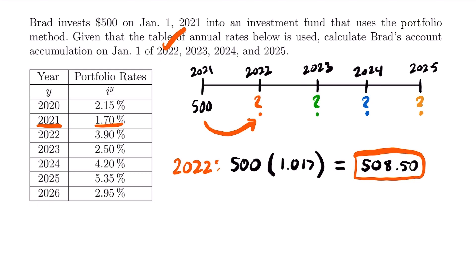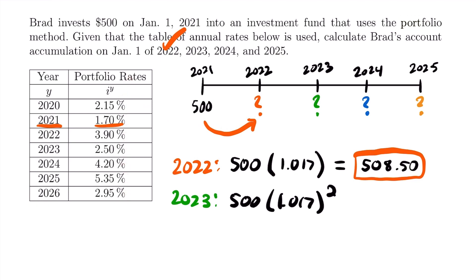Now we want to calculate the accumulated value at the beginning of 2023. It's important to realize here that the portfolio rate is going to change. To calculate the accumulated amount in 2023, it's not going to be as simple as writing 500 times 1.017 squared. We're not accumulating that $500 for two years using the same portfolio rate. The portfolio rates change per year. In 2022, the portfolio rate is now 3.9%, so we can't calculate it that way—that would be incorrect.